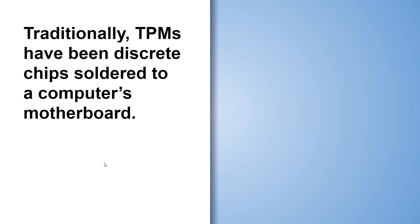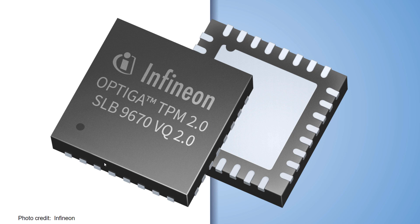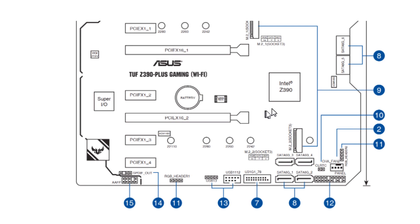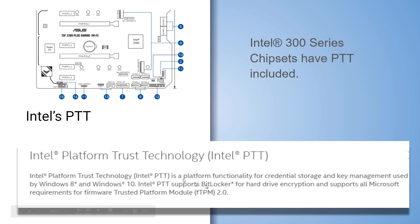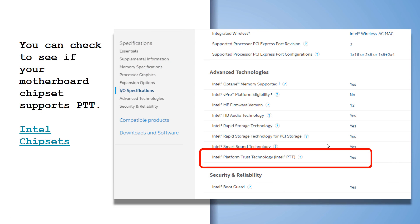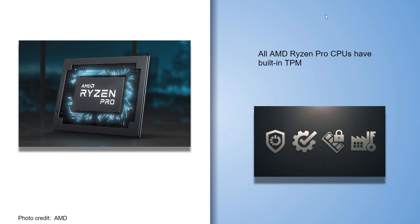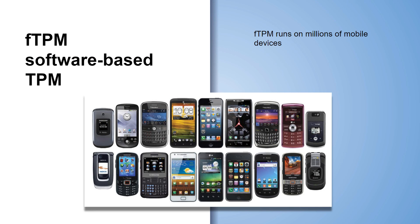Traditionally, TPMs have been discrete chips soldered into a computer's motherboard. With TPM version 2.0, we can now implement TPM integrated into other devices. This is my motherboard with an Intel chipset Z390 — it has Intel's Platform Trust Technology built in, which is an entire TPM 2.0 built into the chipset. You can check Intel's chipset database to see if your chipset supports it. The new AMD Ryzen Pro CPUs have TPM built into the CPU. TPM 2.0 also supports fTPM, a software-based version of TPM that runs on millions of mobile devices — you're probably using it today.